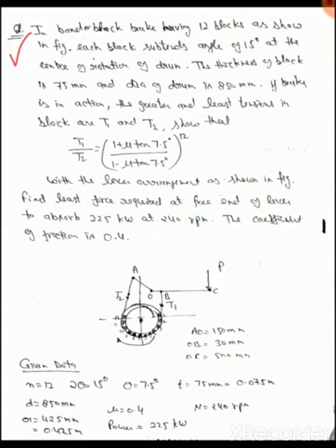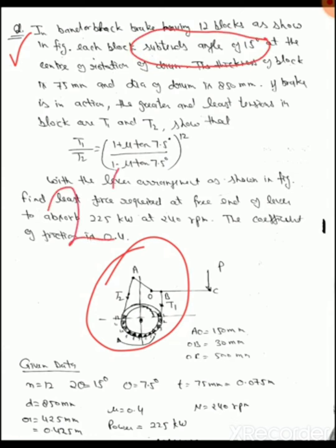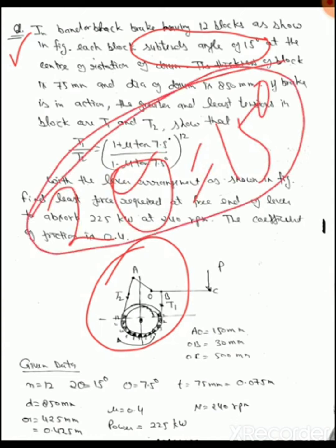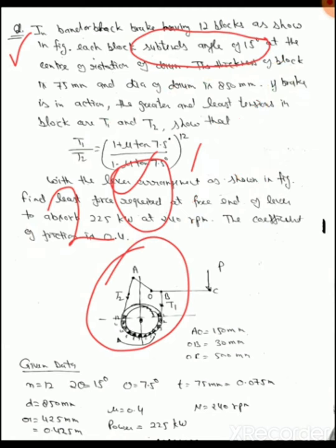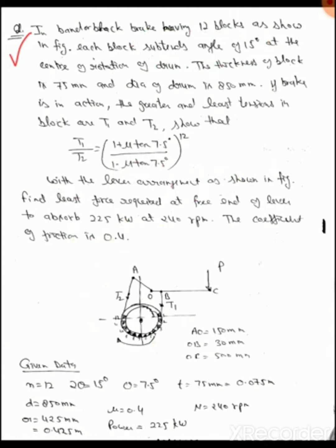Each block subtends an angle of 15 degrees, that means 2θ = 15°, so θ = 7.5°. This is very important. Now moving on: the thickness of the block is 75 mm and the diameter of the drum is 850 mm. If the brake is in action, the greater and least tension in the band are T1 and T2 respectively. T1 is the tension in the tight side and T2 is the tension in the slack side.